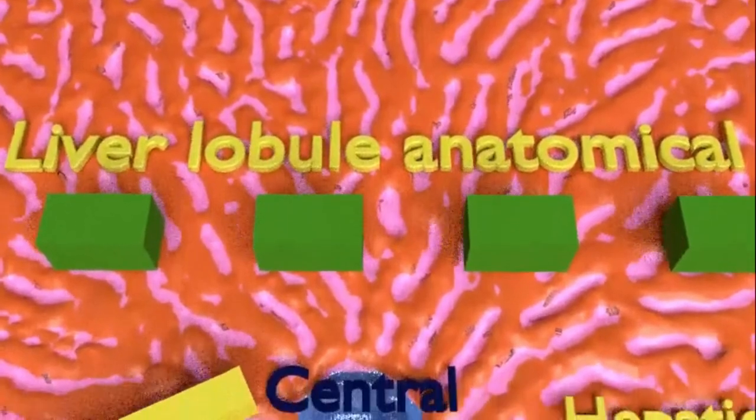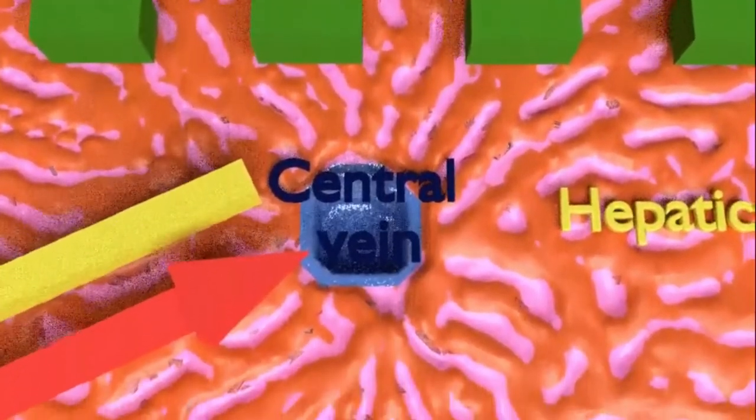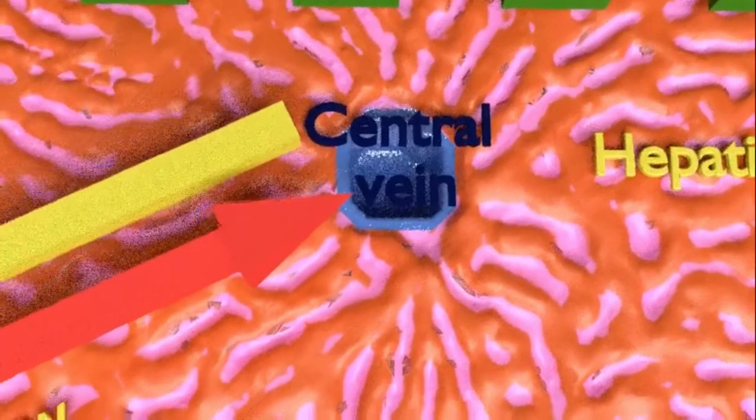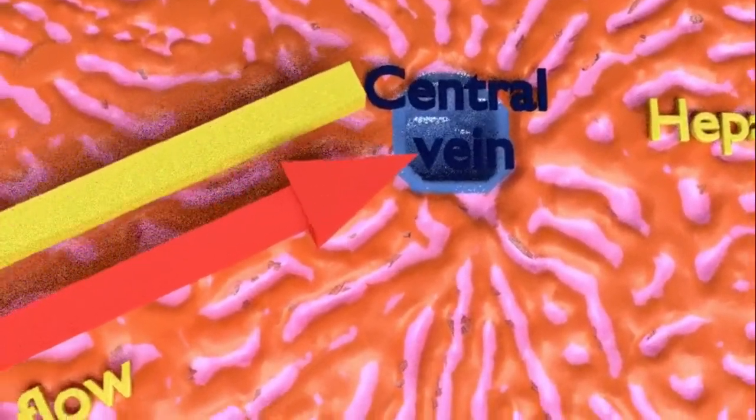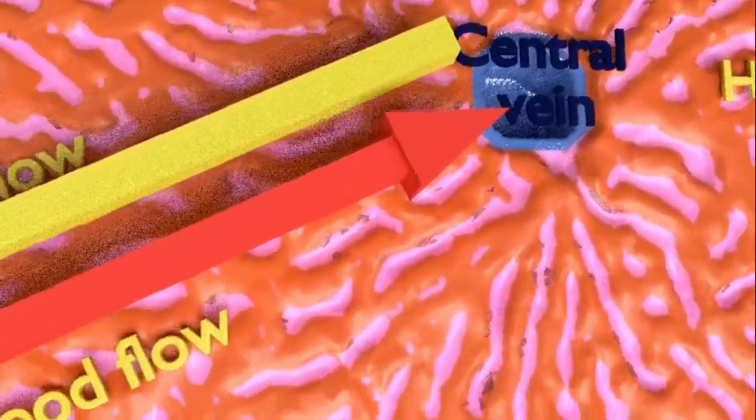The other aspects appreciated in this view of this anatomical lobule are the hepatic trabeculae and the functional flow of blood and bile.